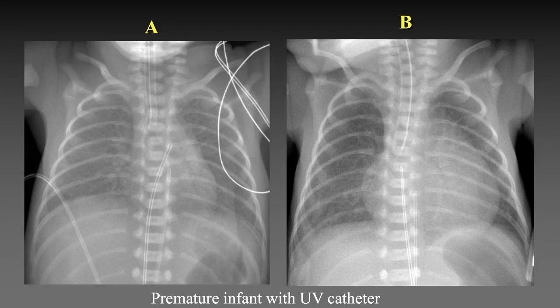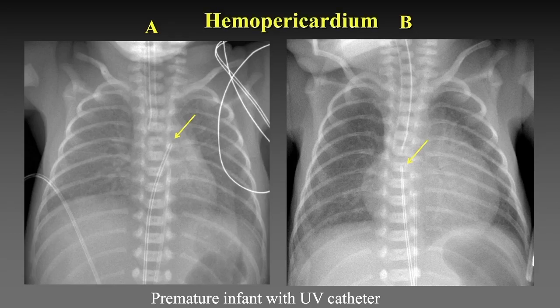This is a premature infant whose umbilical venous and arterial catheters are in place. Notice the position of the UV catheter tip in figure A — it is in the right ventricular outflow tract. It was repositioned and notice the increase in heart size shown in figure B. This infant had a hemopericardium and cardiac tamponade as the result of cardiac perforation.